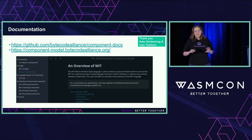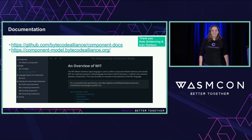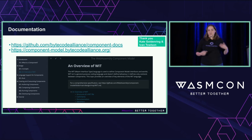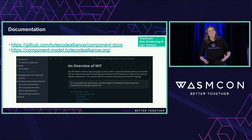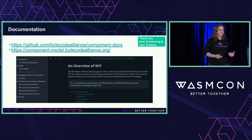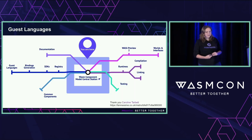Last but absolutely not least — and throughout this conference this is the number one thing people have asked about — is documentation. It is critically important for any ecosystem to have great documentation to say whether it is actually componentized. Special thank you to Ivan and Kate for putting this together. Is it componentized? It's happening — there's a lot more we want to add, and there are many issues in the repo for areas to fill in.